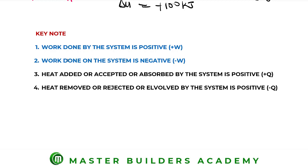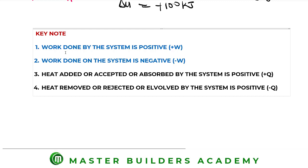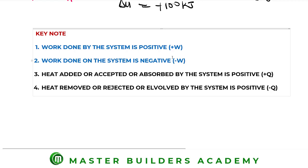Key note two: when work is done on the system — by the environment or any external agent — that work is taken as negative. The value in the question may appear as positive, but because of the wording indicating work is done on the system, you change the sign to negative.